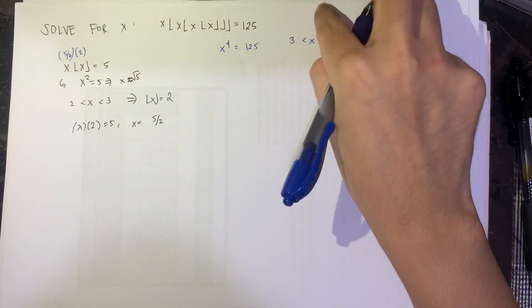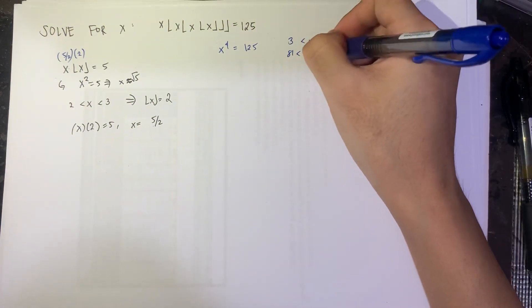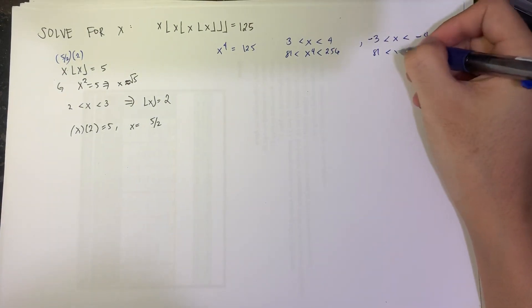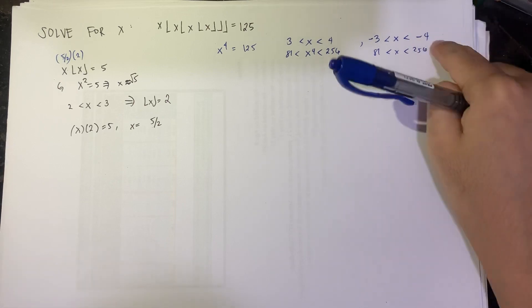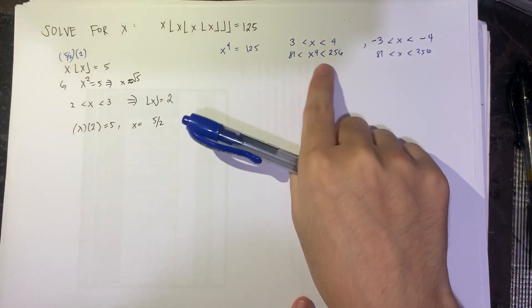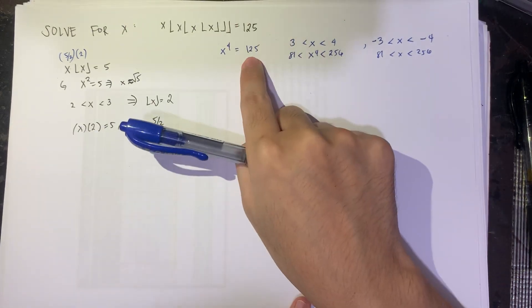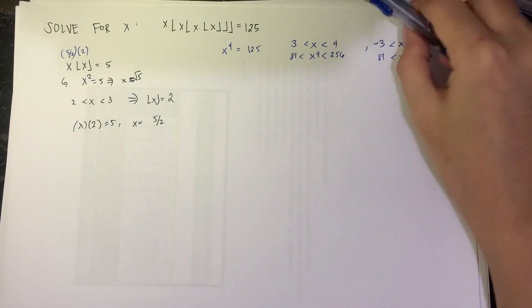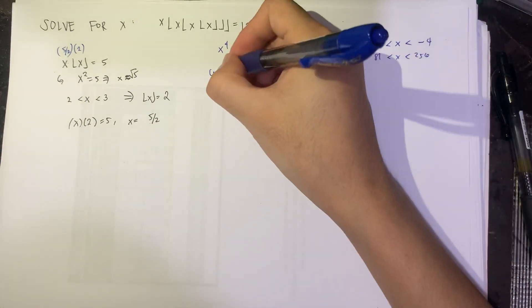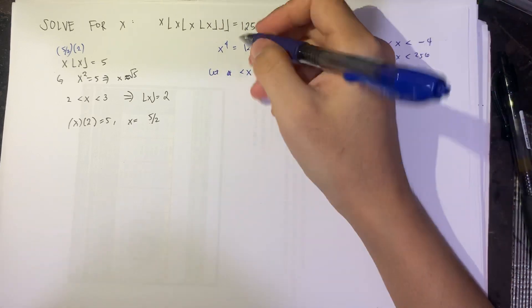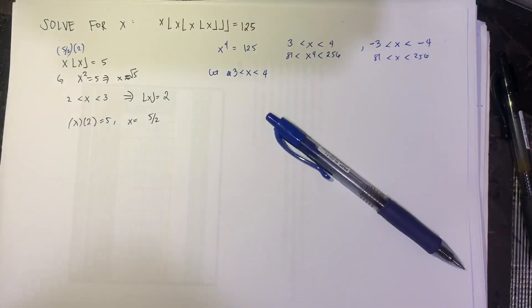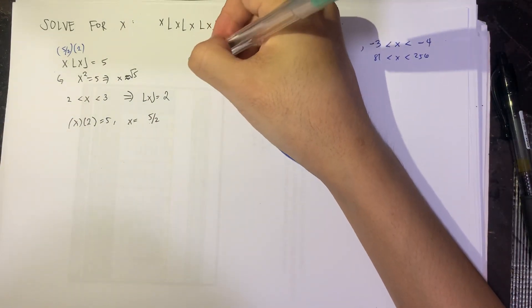Because if we get the 3 to the 4th, that's 81. And then 4 to the 4th, this is 256. Similar to this one, it's 81. This is 256, which embeds or envelopes our 125. So similar to this one, we suppose we let x between 3 and 4. We'll do the positive case muna. So let's consider case positive.